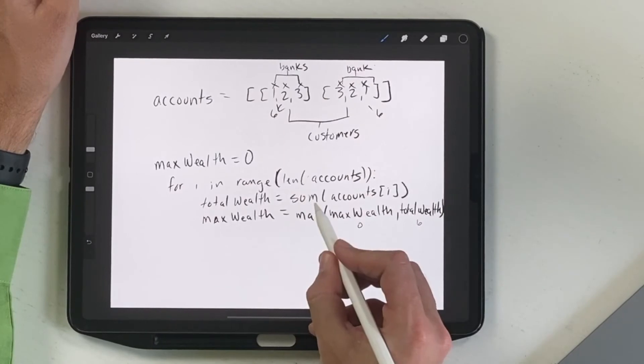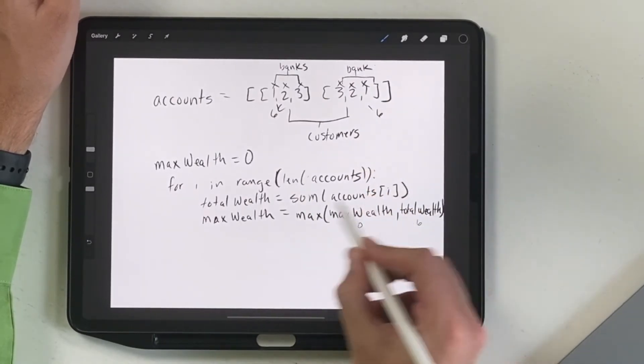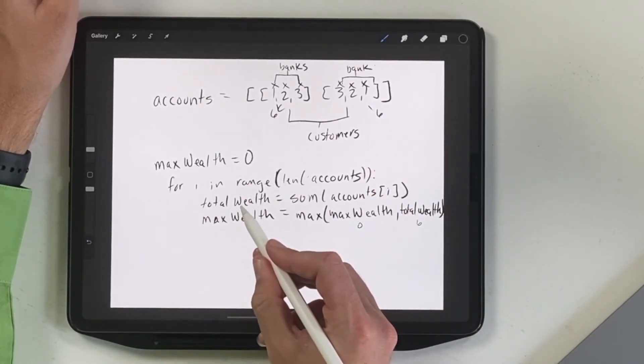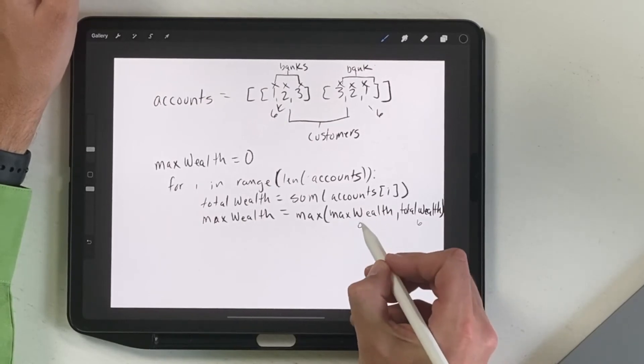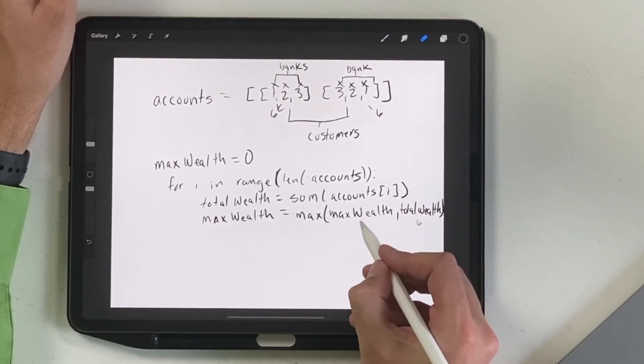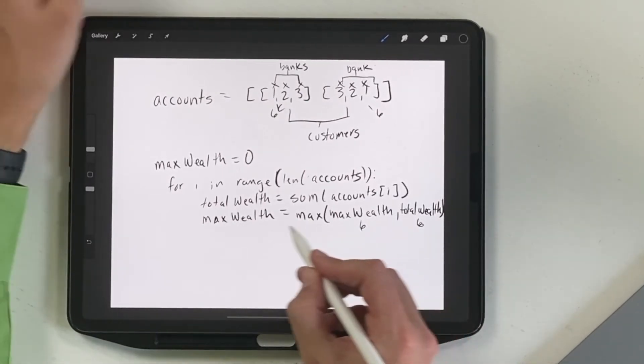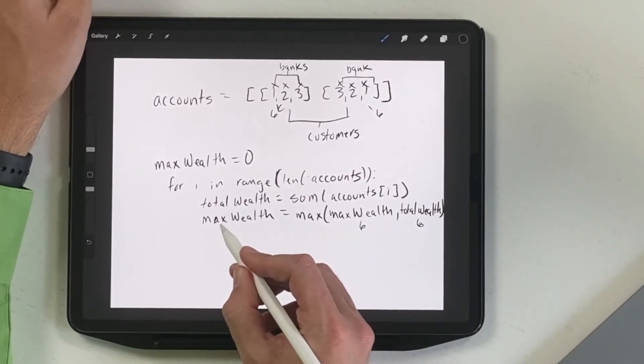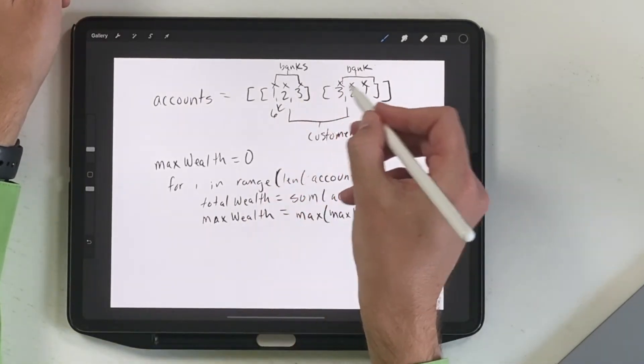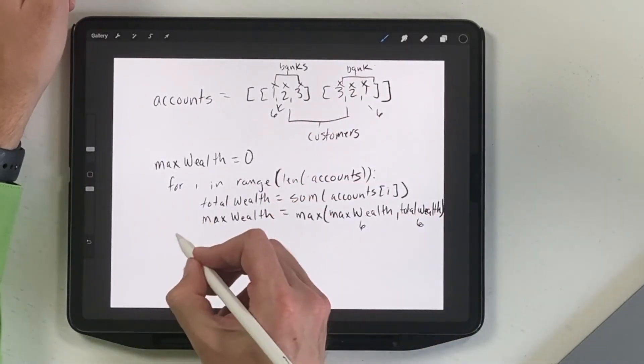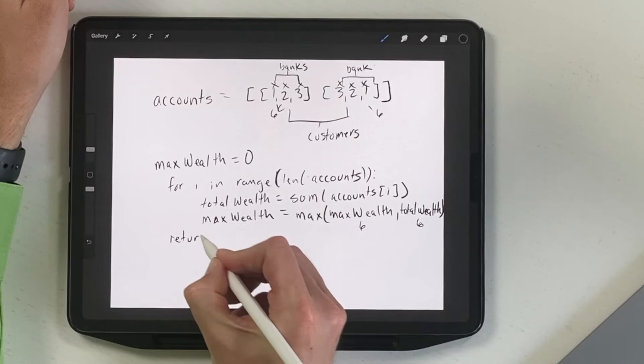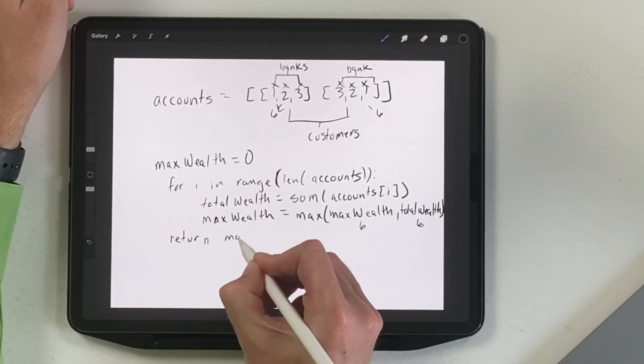So here, we're going to sum that three, two, and one, which is six. So that'll be the total wealth there. Then we'll take this now changes to six, and this one is six. So we'll compare those two. It's the same max. So it'll also be max wealth. And so then when we're done, we've gone through all of the accounts, and we will do is we'll return max wealth.